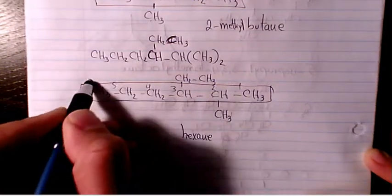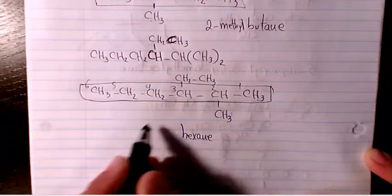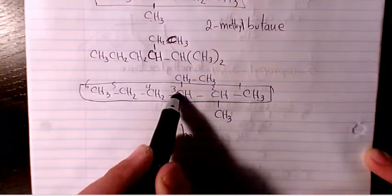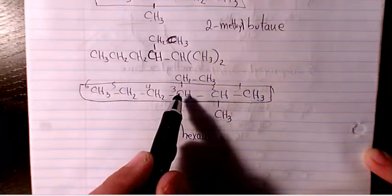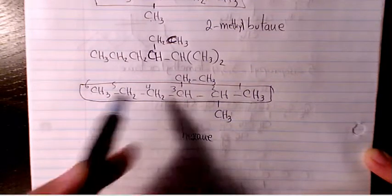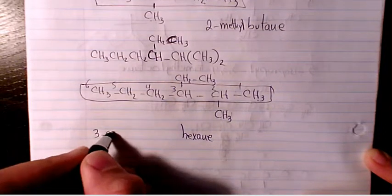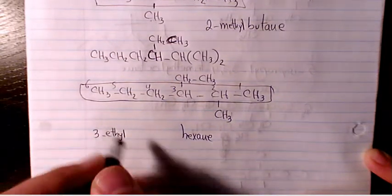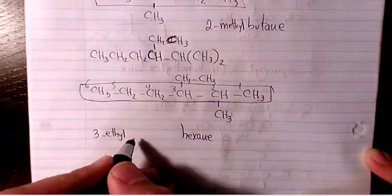So I need to start from here: two, three, four, five, six. We have two methyl and we have three ethyl. So we will have three ethyl because E comes before M.